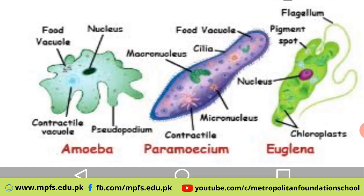Some organisms are made up of a single cell only. Such organisms are called unicellular organisms. For example, amoeba, paramecium, and bacteria are some examples of unicellular organisms.